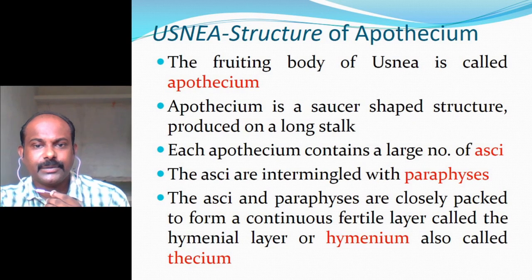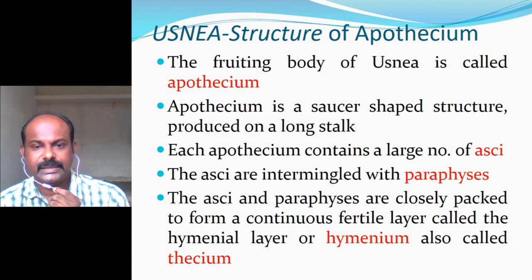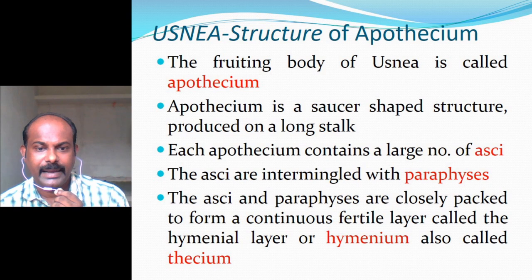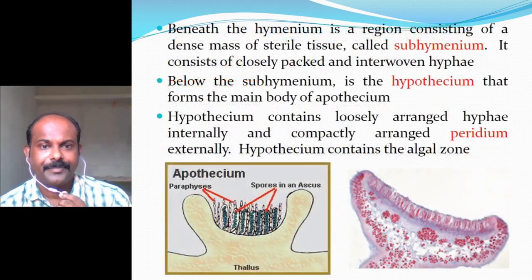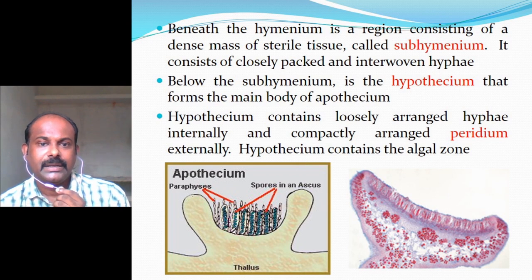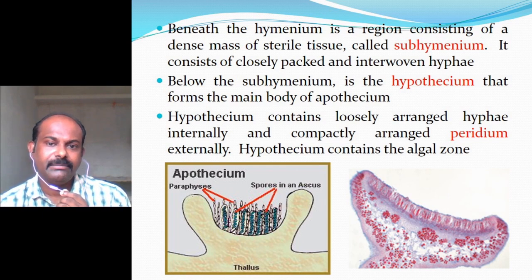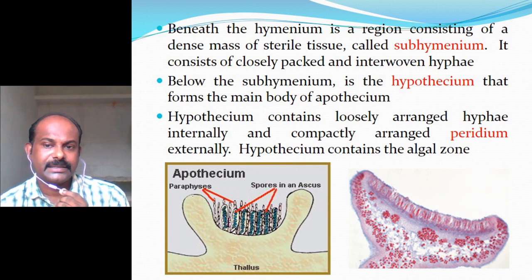The fruiting body of Usnea is called the apothecium. It is a saucer-shaped structure produced on a long stalk. Each apothecium contains a large number of asci intermingled with sterile hyphae called paraphyses. The asci and paraphyses are closely packed to form a continuous fertile layer called the hymenial layer or hymenium, also called the thecium. Beneath the hymenium is the subhymenium, consisting of a dense mass of sterile, closely packed and interwoven hyphae. Below the subhymenium is the hypothecium, which forms the main body of the apothecium, containing loosely arranged hyphae internally and compactly arranged peridium externally. The hypothecium contains the algal zone.